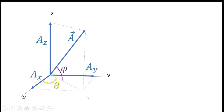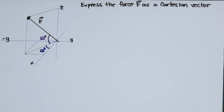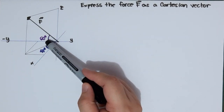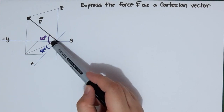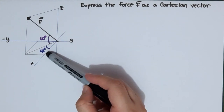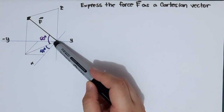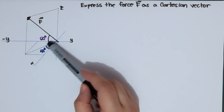This is how to solve this type of problem. Let's proceed. We will now solve a problem expressing the force as a Cartesian vector. In this problem, alpha, beta, and gamma are not given. The only given is 60 degrees, which is the azimuth angle — the angle from vector F to this side in the plane of x and negative y — and 45 degrees, which is the transverse angle from x to this hypotenuse side of the right triangle.